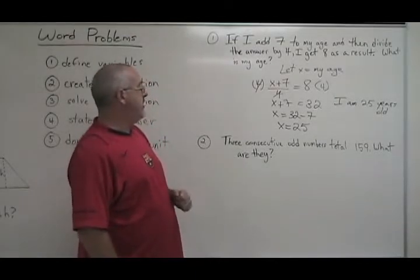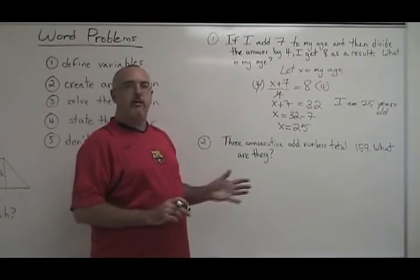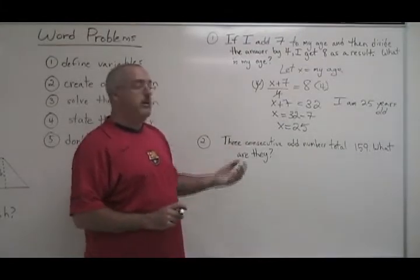Example 2. Three consecutive odd numbers total 159. What are they? The trick here is that there is more than one unknown in this question. They want more than one answer from you. They want all three of these odd numbers.